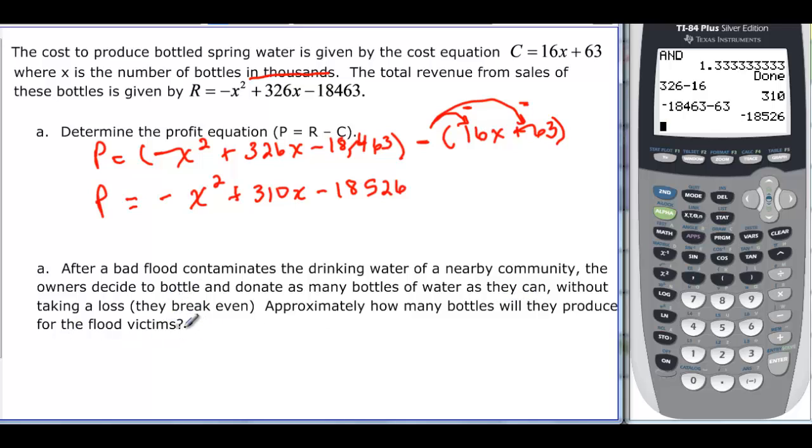That means that their revenue is equal to their cost. Let's think about it this way: revenue equals the cost, or we could say that profit is equal to zero since we already have that nice equation. So zero equals negative x squared plus 310x minus 18,526.